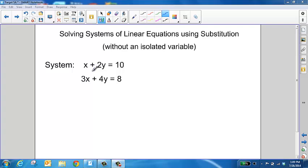We're going to rearrange this equation because the only thing we need to do to isolate that x is just subtract 2y from both sides. So we end up getting x = -2y + 10. Now we have an equation with an isolated variable.